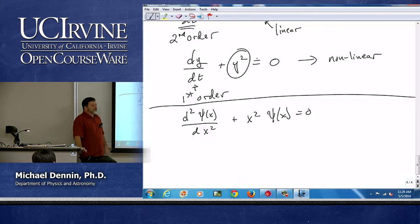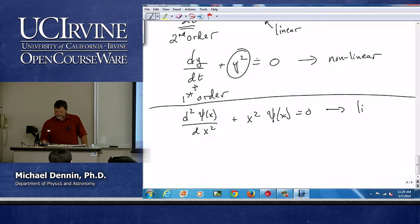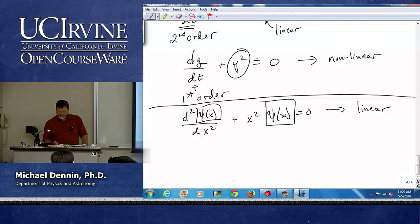What is our definition of linear? What do we focus on? The variable. The variable that we're solving for. What variable are we solving for here? Psi. Does psi ever show up multiplied by itself? No. So this is fundamentally a linear equation because there's the variable. What order is it? Second. Second.